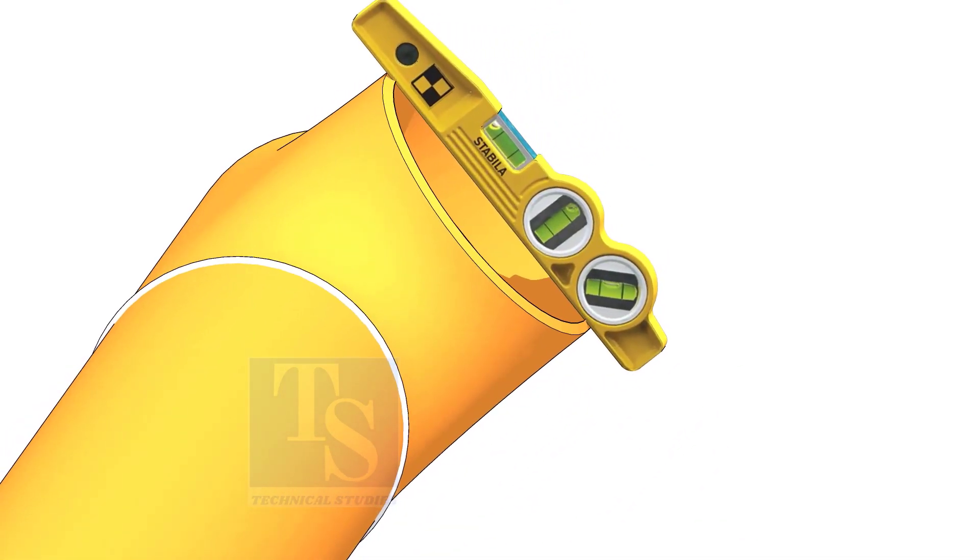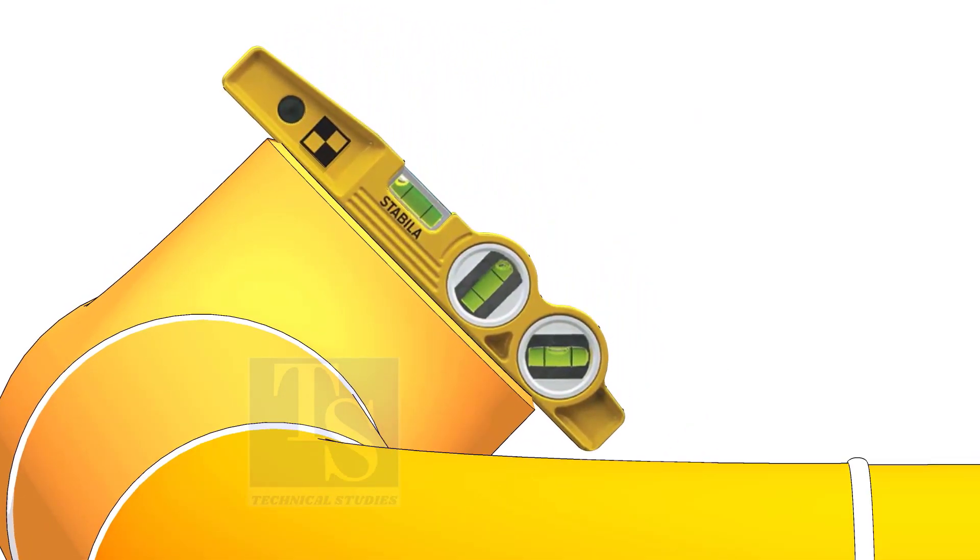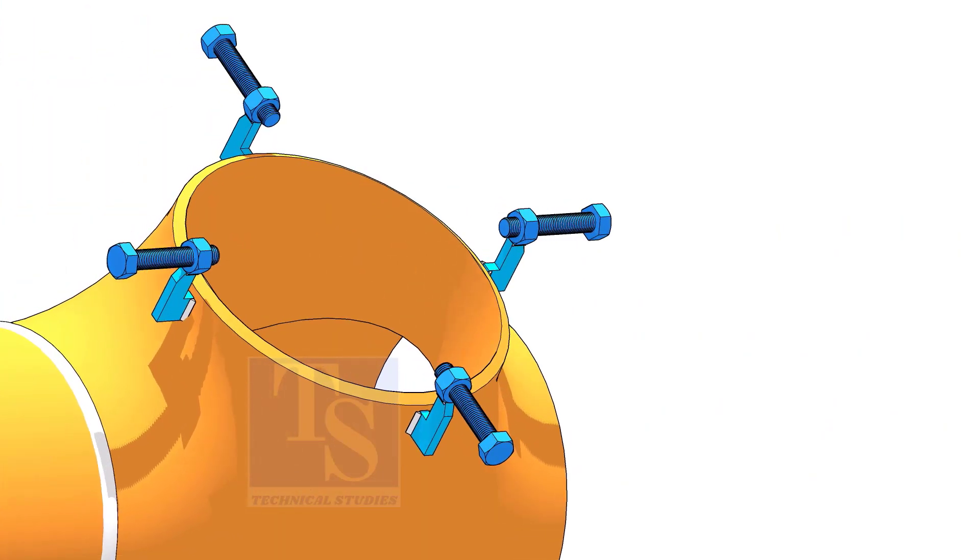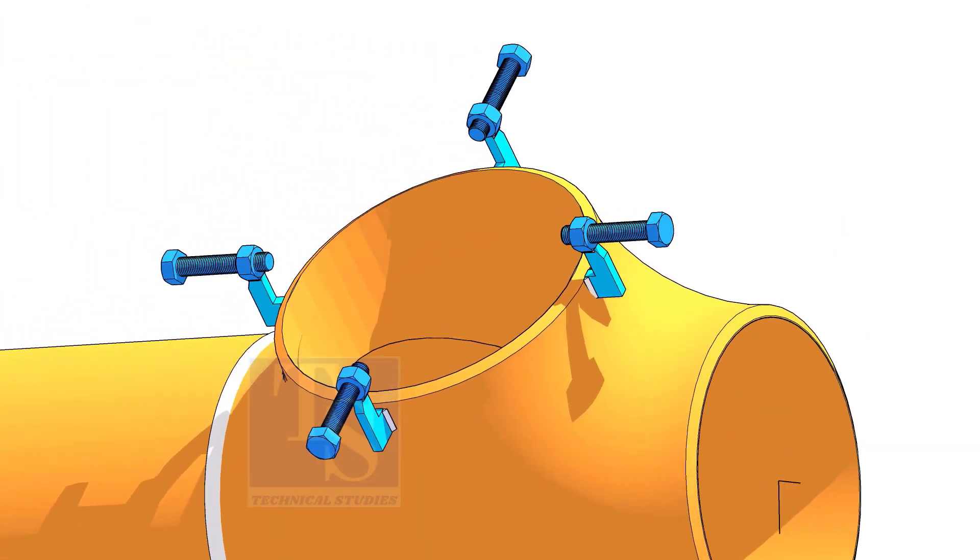We are going to fit up a 45 degree elbow on a 45 degree rotated T. Tack weld jack bolts on the T as shown.